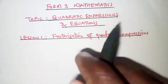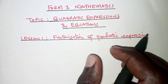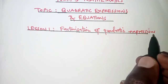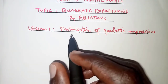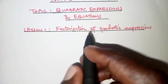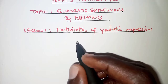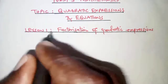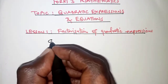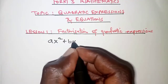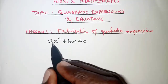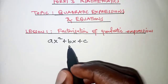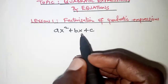This is lesson 1: factorization of quadratic expressions. Before we continue, I want us to note that factorization of quadratic expressions is Form 2 work, and therefore this lesson is just a review of what we did in Form 2. Quadratic expressions are expressions in the form ax² + bx + c, where a, b, and c are constants and x is a variable, meaning it can assume different values.